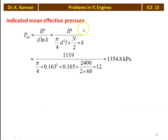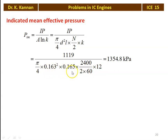Similarly, the indicated mean effective pressure P_IM = IP / (A·L·N·K). Substituting IP = 1119 kW and all numerical values — π/4 × 0.163² × 0.165 × (2400/(2×60)) × 12 — gives 1354.8 kPa. So the indicated mean effective pressure is 1354.8 kPa.